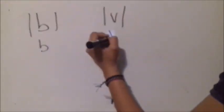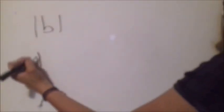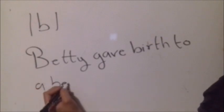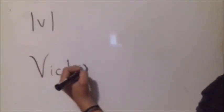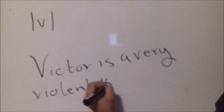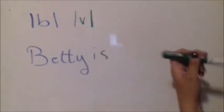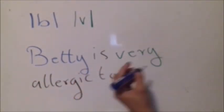Now we have some examples with the B and V sounds, like 'very' and 'berry.' B is always used with B, like in the sentence: 'Betty gave birth to a beautiful baby.' V is always used with V, like in: 'Victor is a very violent kid.' When we have them together we need to be very careful so we don't get confused, like in: 'Betty is very allergic to berries.'